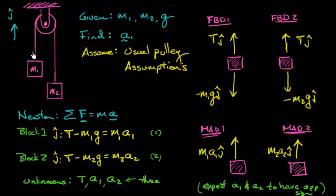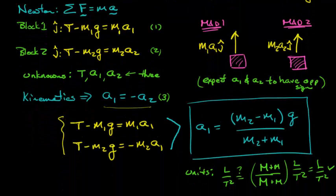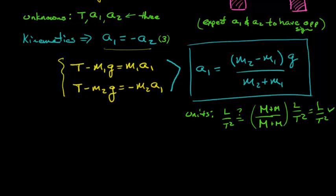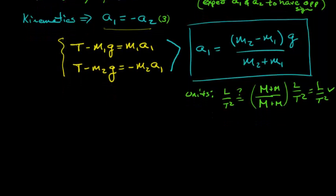So in the previous video we worked on this simple pulley problem. We were given the two masses, given the acceleration due to gravity, and then we wanted to find out the acceleration of block number one. We went through quite a bit of work, drew some free body diagrams, set up equations of motion, set up the kinematic equation relating accelerations to each other, and we ended up with this expression for our acceleration.